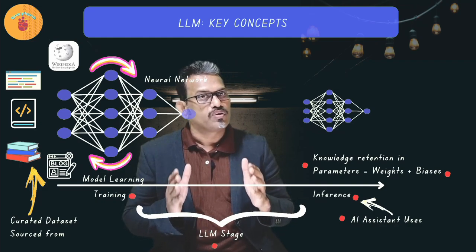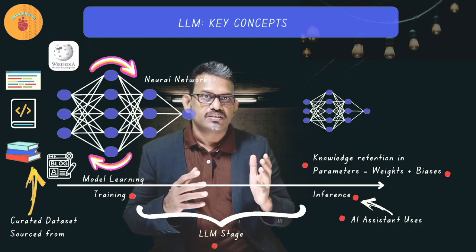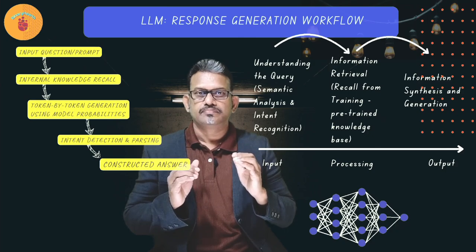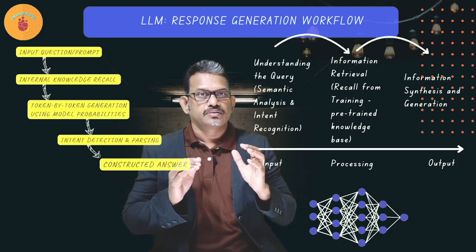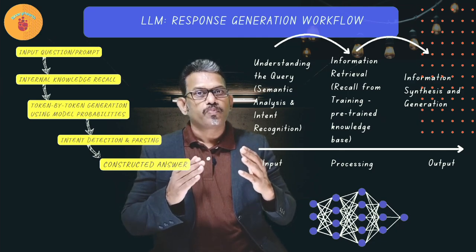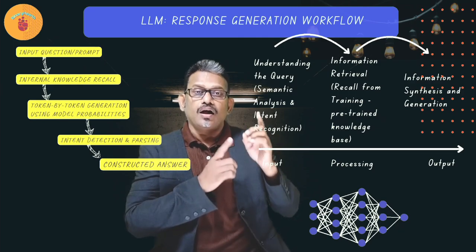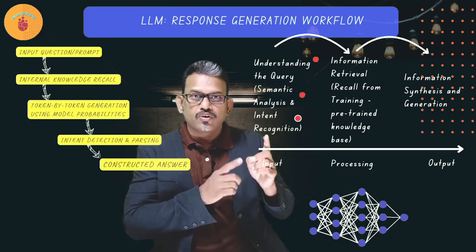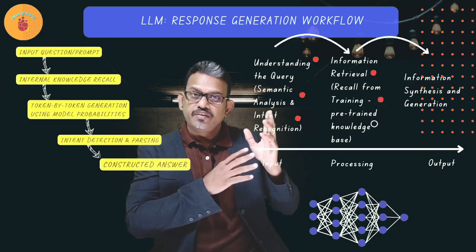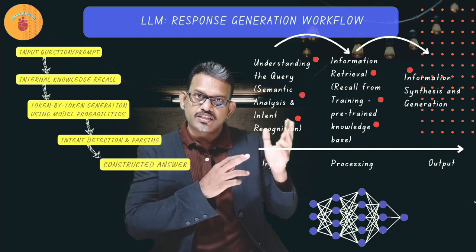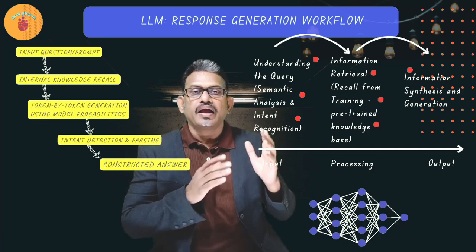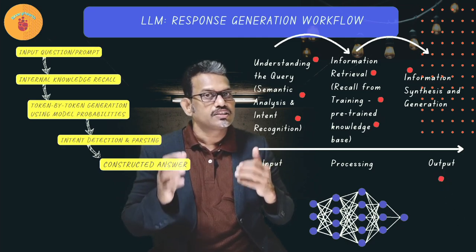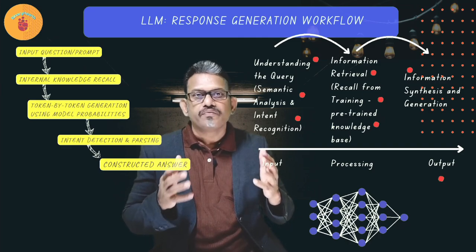Transformers are advanced neural networks designed for sequential data, NLP, vision, etc. They introduce attention mechanisms for better long-range dependency handling. They are core of modern LLMs. Modern LLMs response generation. The workflow for generating a response is like this. Understanding the query: semantic analysis and intent recognition. Information retrieval: recall from training, pre-trained knowledge base. Information synthesis and generation: generation of response. Remember the analogy of chopped apple. LLM can recall the scattered information about Virat Kohli in its multidimensional vector space and respond to prompt who is Virat Kohli as Virat Kohli is an Indian cricketer.